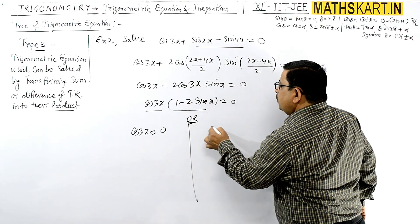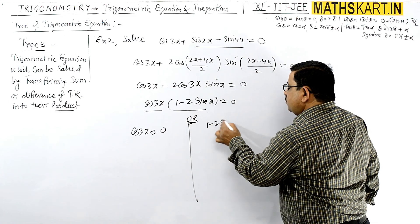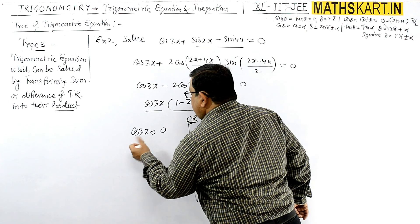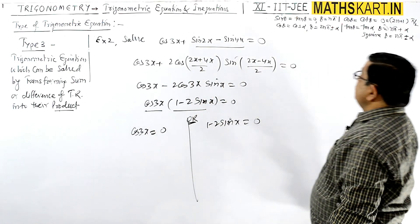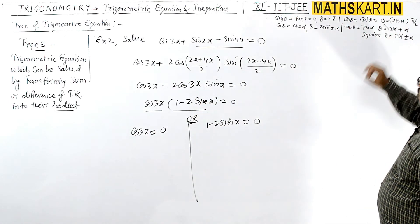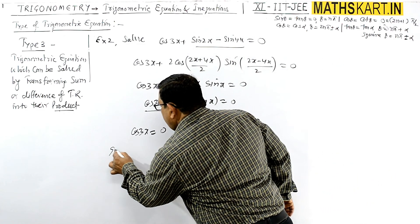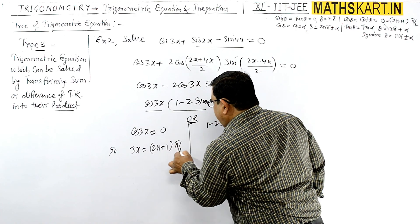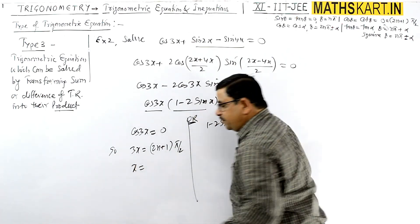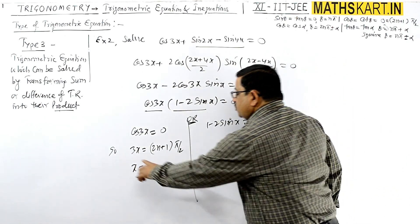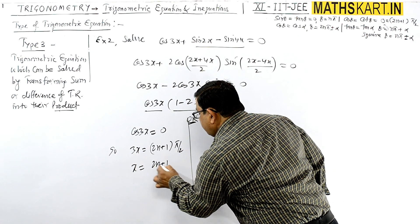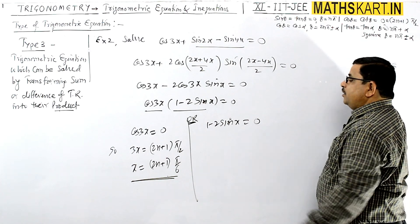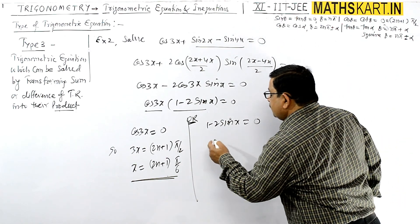You have to write each factor equals to zero individually. So cos 3x = 0 or 1 - 2 sin x = 0. For cos x = 0, x = (2n+1)π/2. So 3x = (2n+1)π/2, which gives x = (2n+1)π/6.